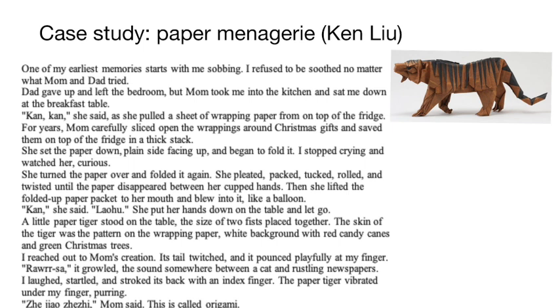She starts folding it, the child watches, and then she speaks Chinese to the child and shows how the paper thing comes to life. We immediately get the sense that this is not an ordinary story — this is speculative fiction, because normally origami doesn't come alive. The conflict in this situation is resolved because the child no longer cries, but something new is introduced: magical origami. The mother says 'this is called origami,' but we as readers know this is just not ordinary origami. So this scene does a lot in terms of character development and in terms of introducing what kind of genre the story is.